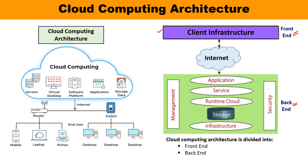The second component is internet. The internet connection is very important because it is the only thing through which a connection is established and communication interaction can happen between the front end and the back end. Internet connection acts as a medium or a bridge between the front end and the back end.